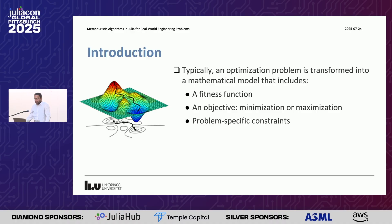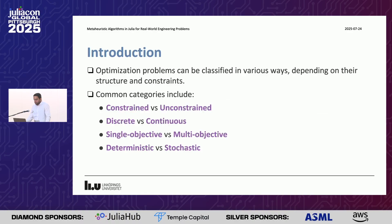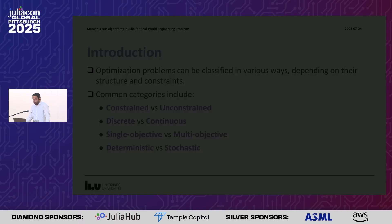An optimization problem can typically be transformed into a mathematical model. This mathematical model has a fitness function, an objective of minimizing or maximization, and some constraints, maybe. Optimization can be classified in different ways — for example, constrained or unconstrained, discrete or continuous, single-objective vs. multi-objective, or deterministic or stochastic.